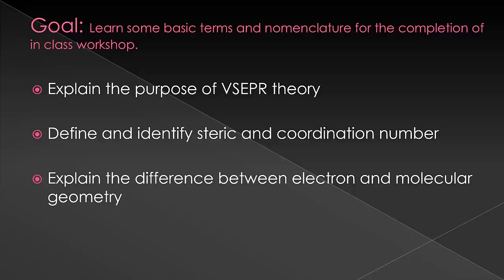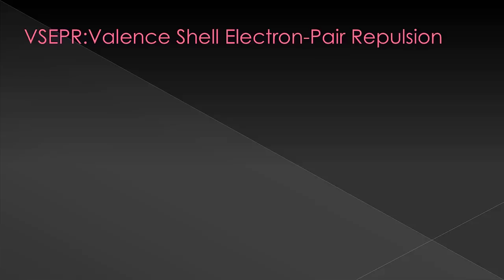First we'll explain the purpose of VSEPR theory, and then we'll define and identify the difference between steric and coordination number. I'd like you to have a good knowledge of those before you walk into class, and then explain the difference between electron and molecular geometry. In this video, we're not going to really learn how to actually go about finding the electron and molecular geometry. We'll do that in class, but I want you to kind of know the difference so you have an idea when we're going through and doing it in class what we're looking at.